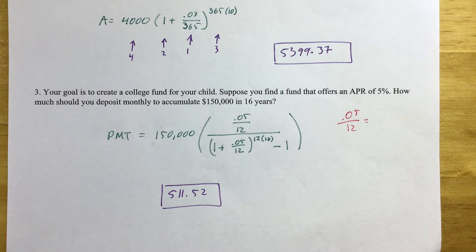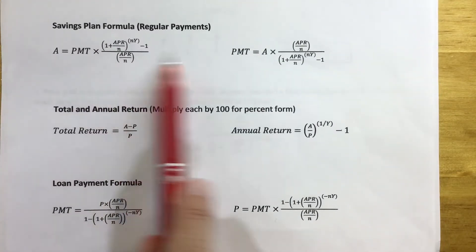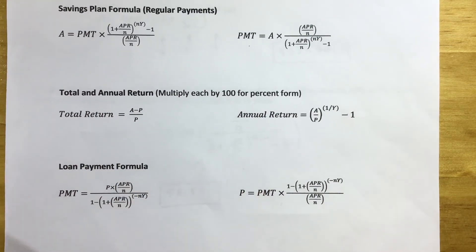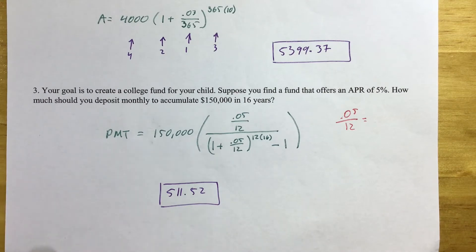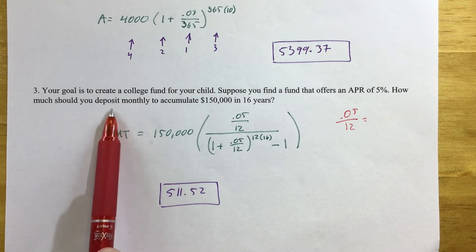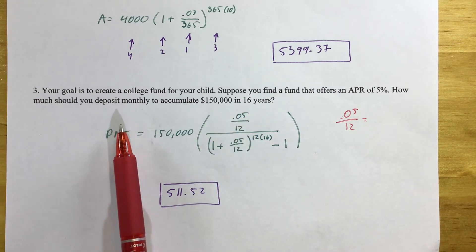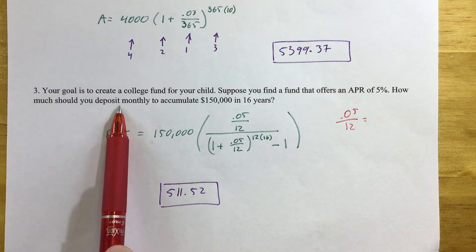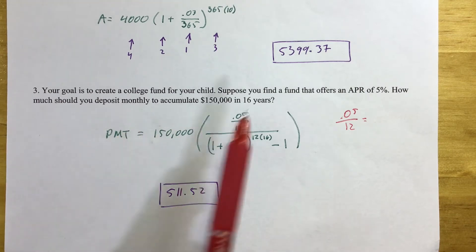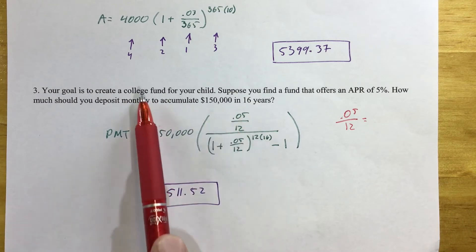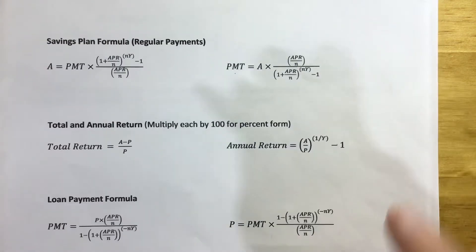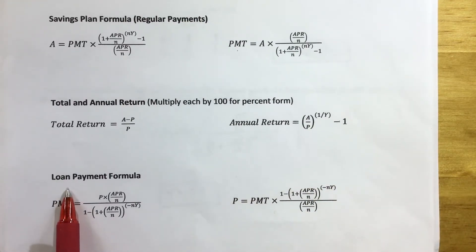For the next few problems, we're looking at cases where you don't have a single deposit or single payback, but instead monthly installments. That means we'll use the savings or loan formulas. Problem 3 says your goal is to create a college fund. You find a fund offering 5% APR. The key phrase is 'deposit monthly' — this isn't a one-time deposit that runs for 16 years. You're continuously adding money, so it's one of the savings formulas, not one of the first two.